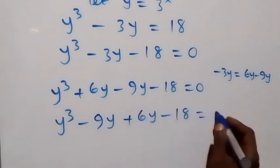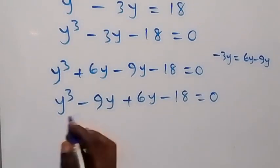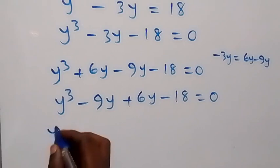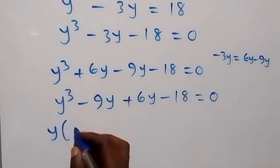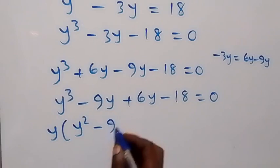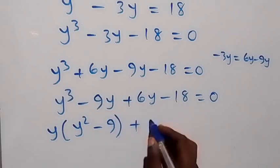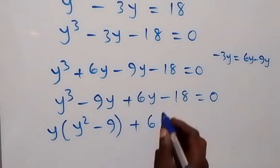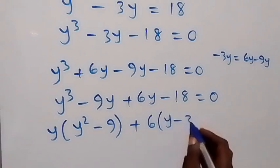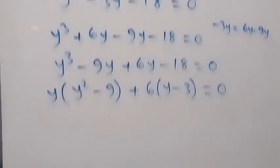Then from these two terms we have y common, and from these two terms we have y squared minus 9, plus here we have 6 common. We are left with y minus 3, which is equal to 0 on this side.